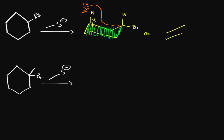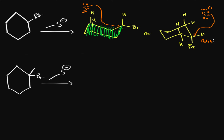However, if we use the chair conformation where bromine is axial and the hydrogens are equatorial, the sulfur with its negative charge can come from a backside attack without having to pass through the middle of the molecule. This shows that axial conformations are favorable for SN2 reactions — and E2 as well. The product is the cyclohexane with the sulfur group from backside attack; stereochemistry doesn't matter here since it's not a chiral center.